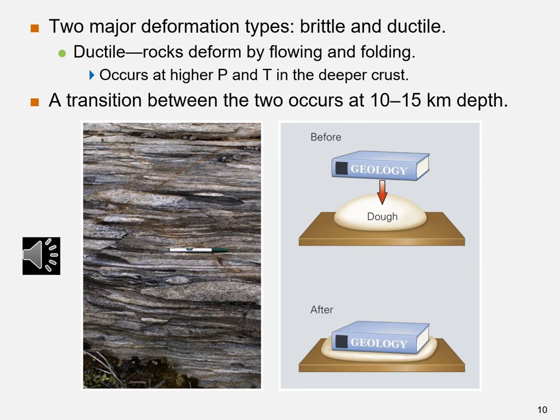Ductile deformation occurs where pressure and temperatures are higher, causing rocks to deform by strain, producing flowing and folding. This occurs in the lower crust, generally at depths greater than 15 kilometers. A book falling on dough, flattening it while keeping it coherent, is an example. A photograph shows conglomerate rock with quartz layers smeared by ductile deformation. Between 10 and 15 kilometers is a transition zone where both folding and faulting occur.